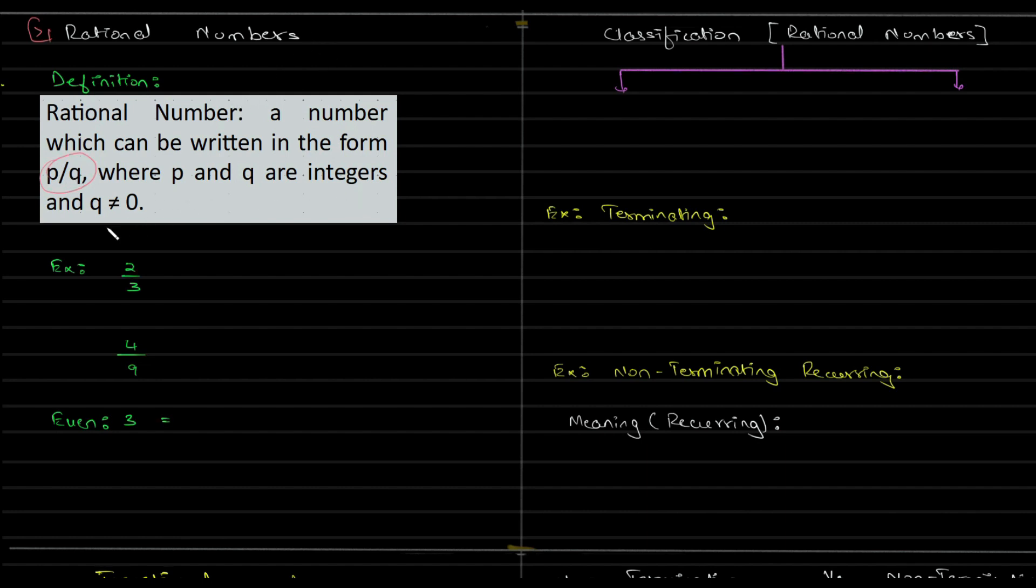Basically they are talking about fractions, p divided by q. p is a variable and q is a variable and there is a line between them. p by q is nothing but you have a numerator and a denominator, and basically such numbers are your rational numbers.